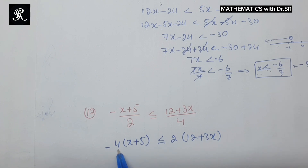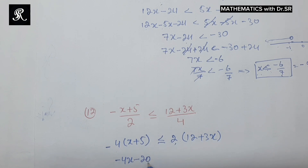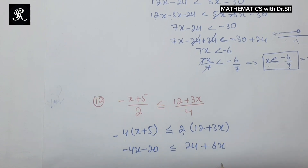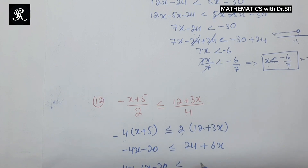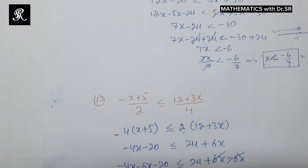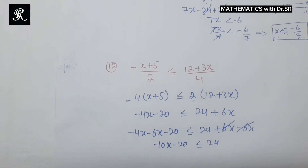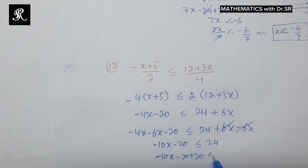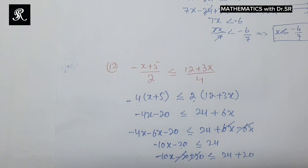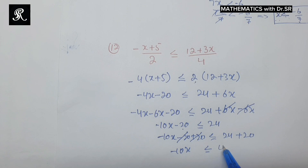Now we multiply inside the brackets. 4 times negative gives negative 4x minus 20, less than or equal to 24 plus 6x. We shift the like terms to the same side: negative 4x minus 6x, and 24 plus 6x minus 6x cancels out. We are left with negative 10x minus 20 less than or equal to 24. Now we shift 20 to the right side, giving negative 10x less than or equal to 44.